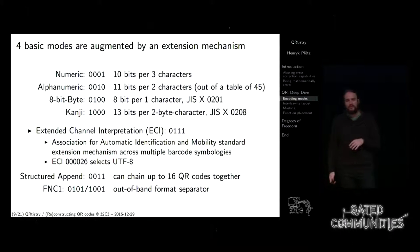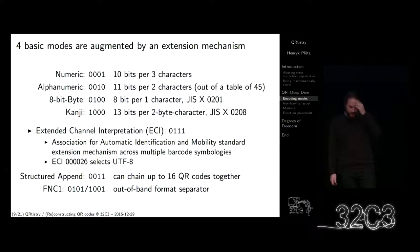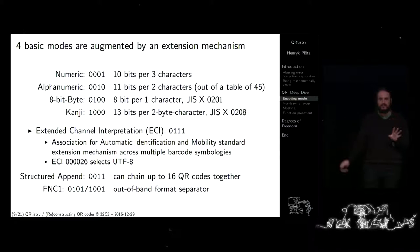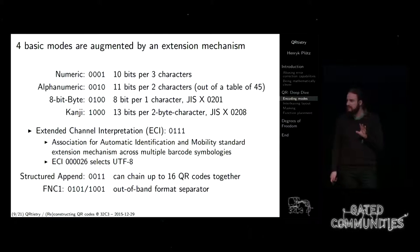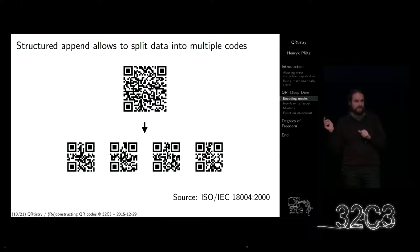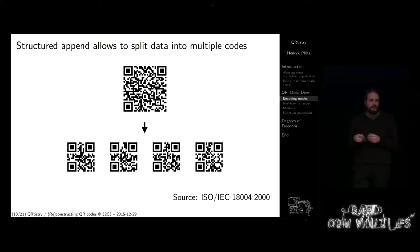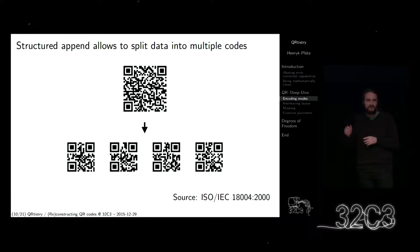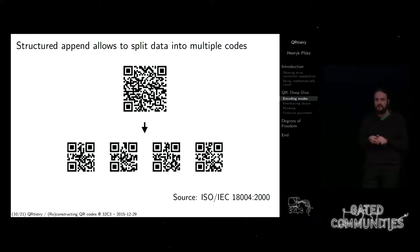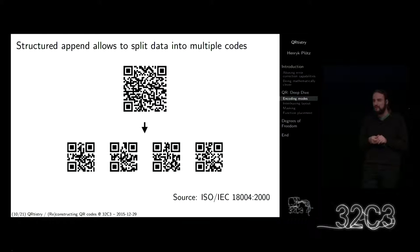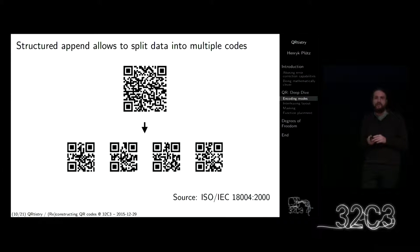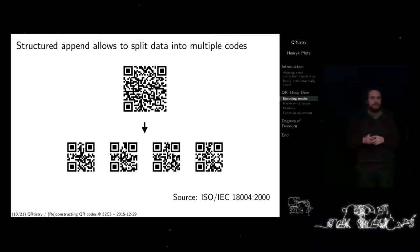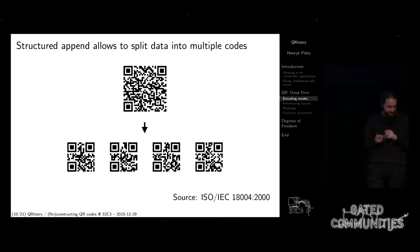Ich habe ein Beispiel auf dem nächsten Slide. Ein weiterer Modus ist das FNC1 — darüber werde ich aber nicht sprechen, das ist Barcode-Zeugs, da gibt es sehr viele spezielle Sachen. Das ist ein Beispiel für das Structured Append. Die vier Codes zusammen haben genau die gleiche Bedeutung wie der größere obere Code. Aber der Android-Reader kann zum Beispiel die vier einzelnen Codes nicht lesen — er zeigt nur einen Fehler. Wenn man das mit einem alten Nokia-Phone versucht, wird es einem sagen, dass das jetzt der erste von vier Codes ist, und dann die weiteren Codes scannen.